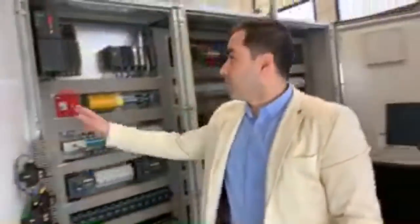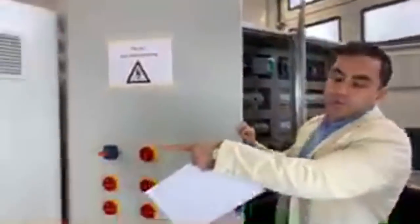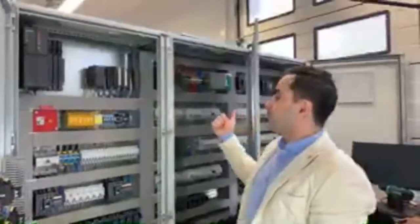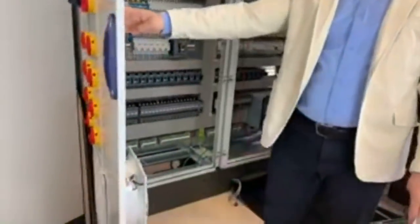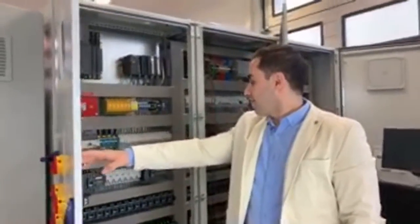You can see that the fan we have here is really large compared to the other one — that's because this is a bigger panel. This one is a two-door control panel and this other one is a three-door, so we need a bigger fan to keep the temperature at a normal level.